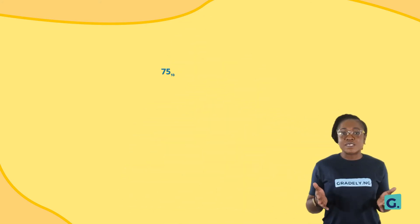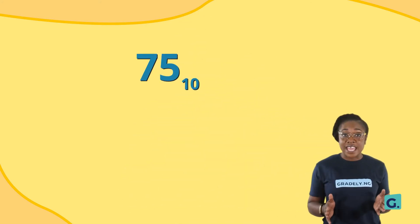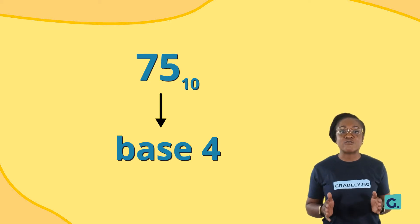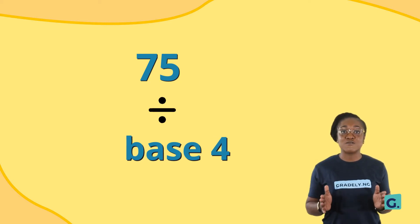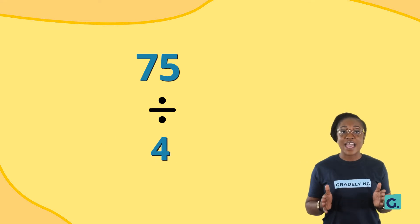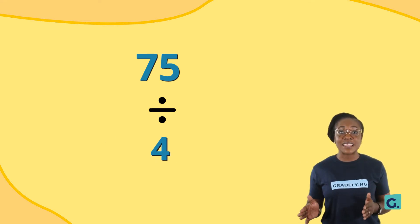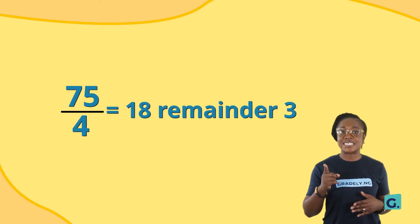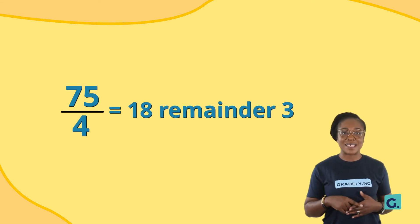Let's take an example of 75 base 10. We will convert 75 base 10 to base 4. To do this, simply divide 75 by 4 and record the remainders. 75 divided by 4 is 18 remainder 3.